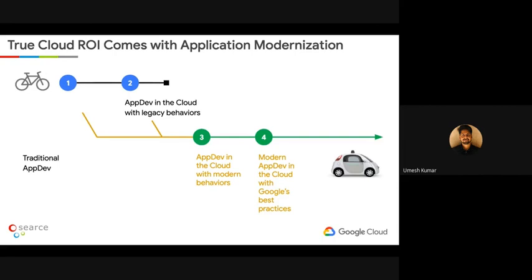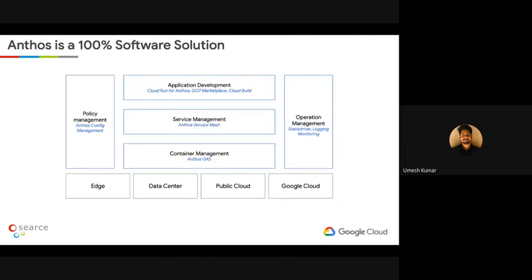Traditionally it had to be app modernization after moving to cloud — that's when all those practices come into picture. This was a slide where Roman quite clearly explained Anthos as a platform and what open-source tools it is made up of — starting from GKE, the service mesh, cloud run, config management, and Stackdriver logging and monitoring, which is operations. What I'm going to do is go inch-deep in each of these components and explain how they all work together, how individually they are excellent in what they do, and how Anthos as a platform works.